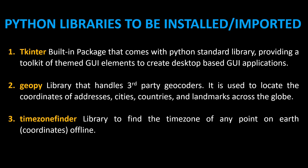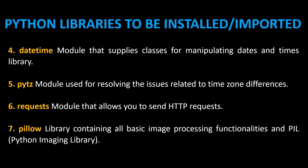These are the Python libraries to be installed or imported for use in this program. First is Tkinter, a built-in package that comes with Python's standard library, providing a toolkit of themed GUI elements to create desktop-based GUI applications. Next we have the GeoPy library that handles third-party geocoders — it is used to locate the coordinates of addresses, cities, countries, and landmarks across the globe. Then comes the TimezoneFinder library, which finds the time zone of any point on Earth's coordinates offline. Number four: the datetime module, which supplies classes for manipulating dates and times. Number five: the pytz module, used for resolving issues related to time zone differences.